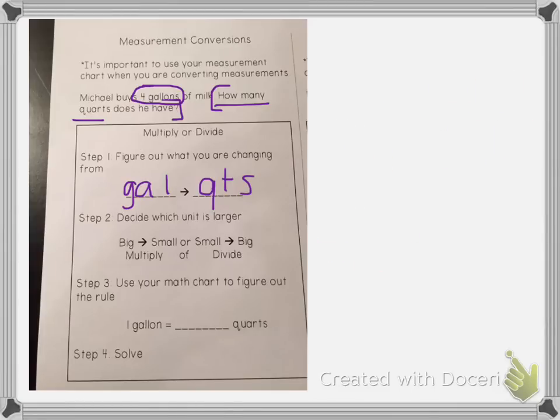So we are going from a bigger unit to a smaller unit and that means that we're going to be multiplying and our math chart is going to help us figure out the rule or figure out what we're multiplying by.